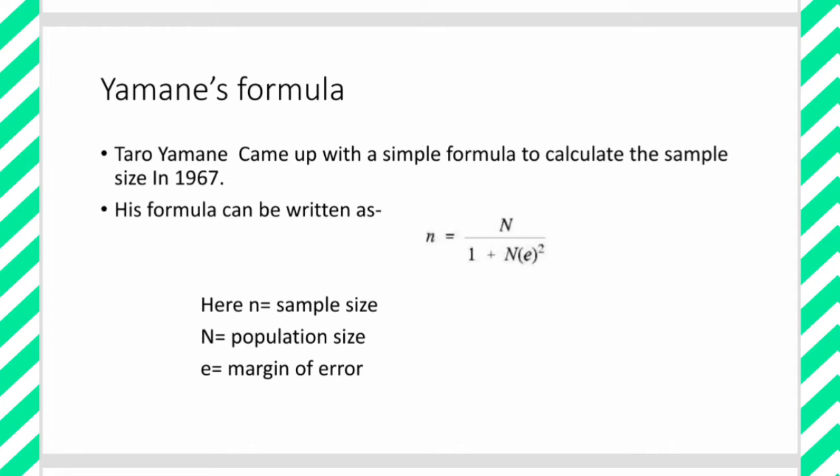If we know the total number of population—suppose in a district we know the exact number of households—we can apply this formula by taking our own choice of margin of error. You can keep the error term at 1%, 5%, or 10%. If you are using the 1% error term, that means your sample is 99% accurate, respectively 95% accurate and 90% accurate. So this is Yamane's formula for finding sample size.